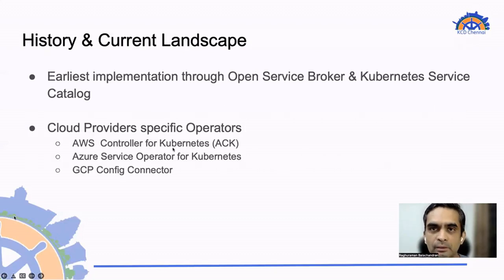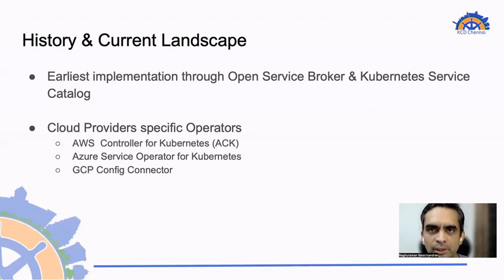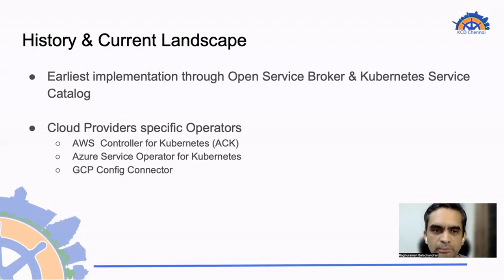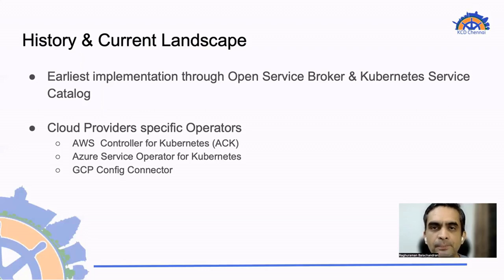In the past, there have been attempts to achieve this from a Kubernetes cluster itself. One of the earliest implementations used the Kubernetes Service Catalog API, where you could have an open service broker implementation to provision cloud resources through Kubernetes. Currently, all the cloud providers offer their own specific operators. For example, AWS offers something called ACK — AWS's own controller for Kubernetes. Azure has the Azure Service Operator, and GCP has the GCP Config Connector. All of them are custom operators provided by the specific cloud provider, which you can install on the cluster and provision respective cloud services through these operators.